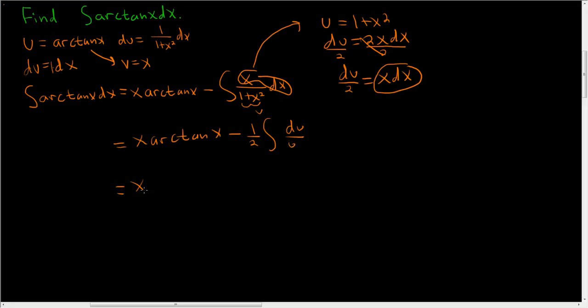So we end up with x arctan x minus 1 half. This integrates to the natural log of the absolute value of u plus our arbitrary constant.